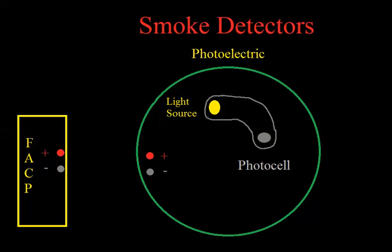Welcome back. In this video I'm going to explain how smoke detectors work. There's two basic types of smoke detectors: photoelectric and ionization. First we're going to look at the photoelectric.